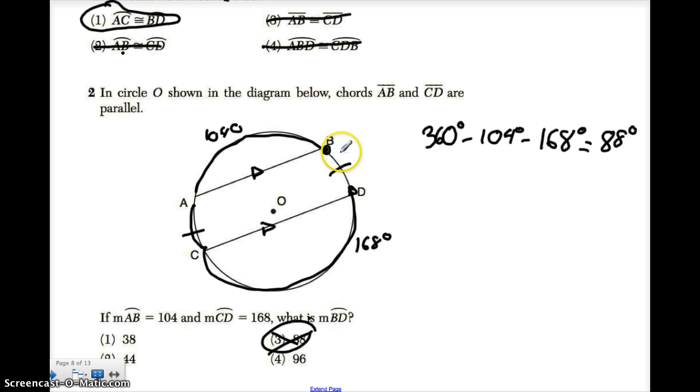That means that AC and BD, these two missing pieces both would add up to 88. But that's not the answer. We just want to know what BD is, this part. And since we know that these two are congruent, what we'll do is take 88. And since they're both equal, I can cut it into 2. So divide by 2,